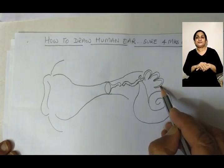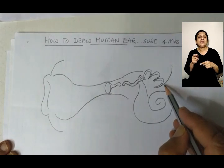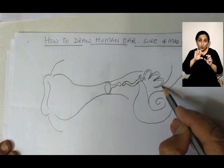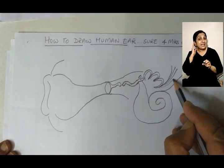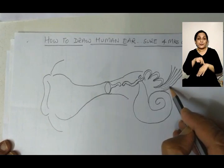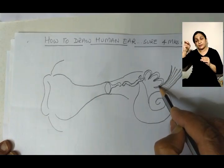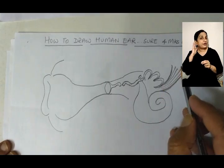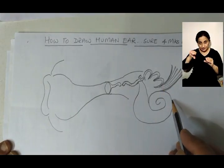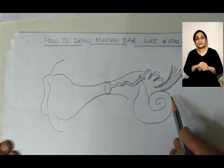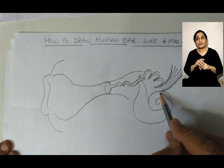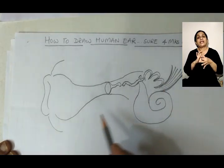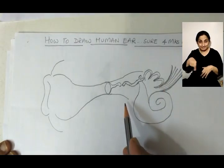From this point the auditory nerves are coming out, so you can draw a bunch of them here like this. These auditory nerves are connected to the cochlea.